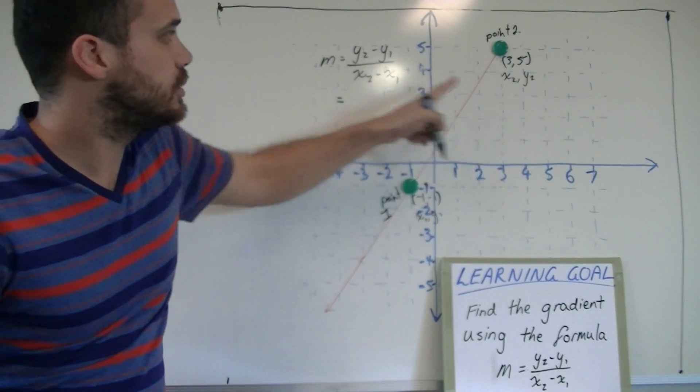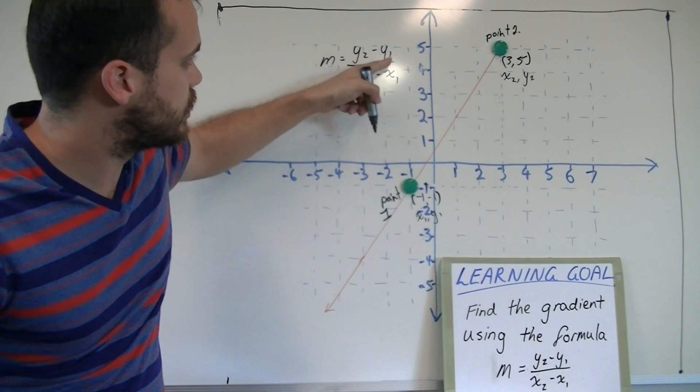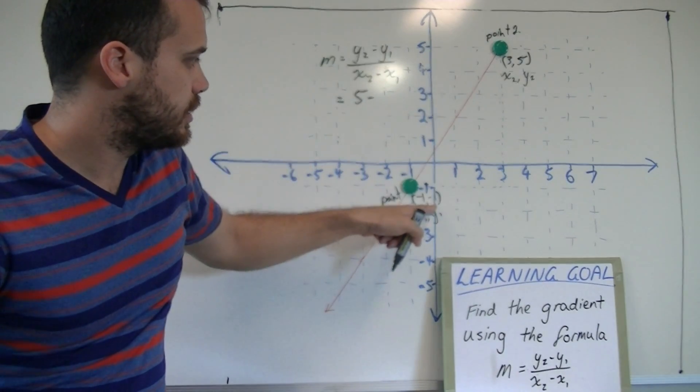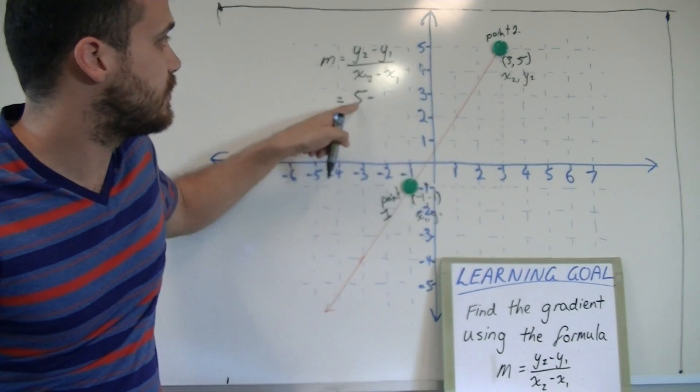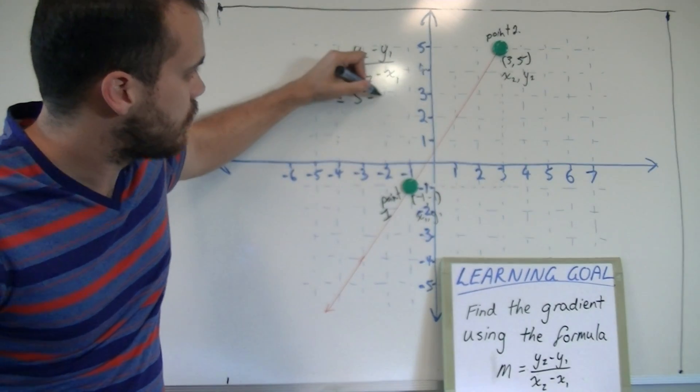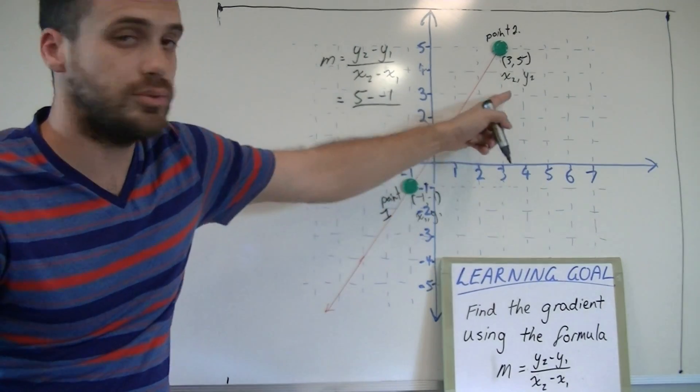y2 is point 2's y value, which is 5. So it's 5 minus y1. We're going to put in y1, which is negative 1. So this is going to be 5 minus negative 1 over x2, which is 3.